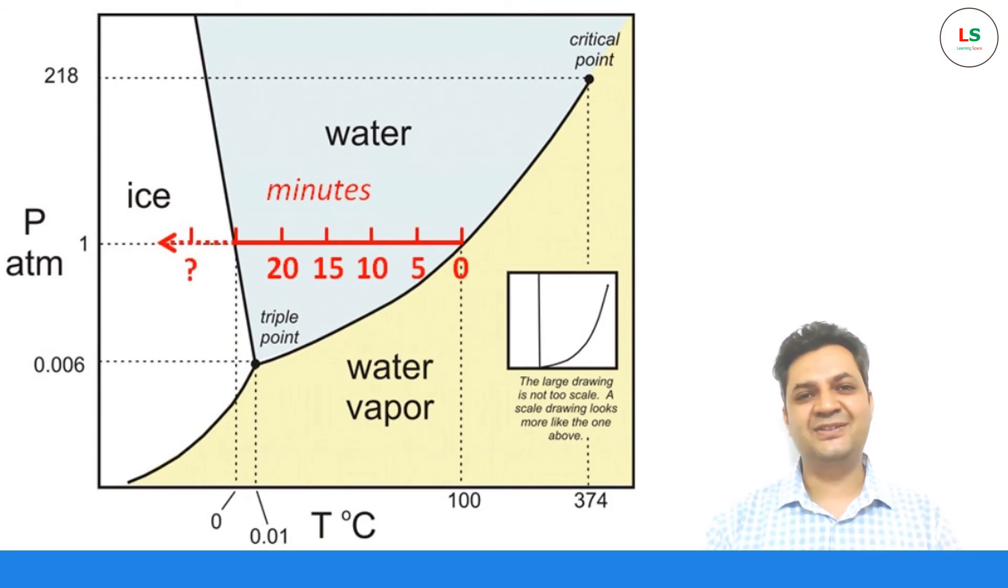Here we have the transition curves to obtain the triple point of water. Every known element has its own triple point.